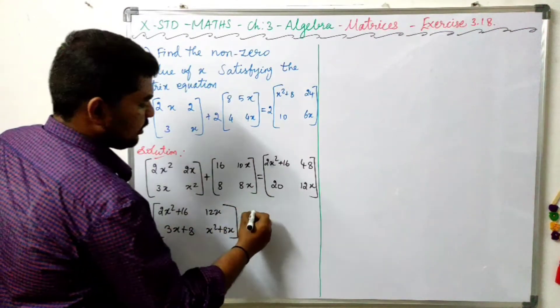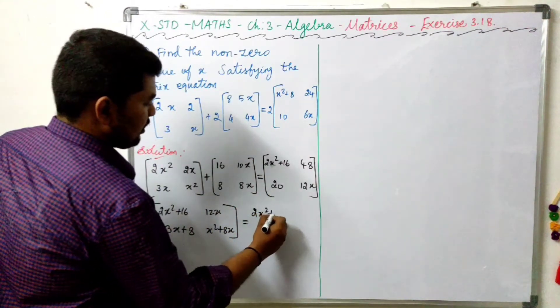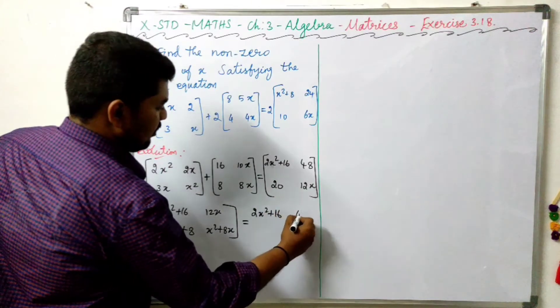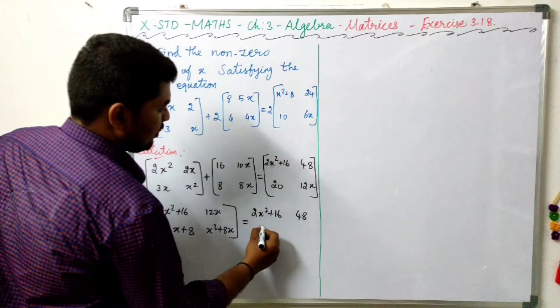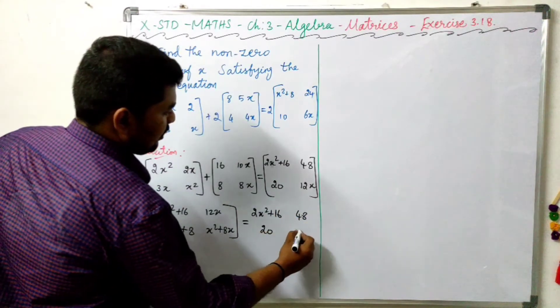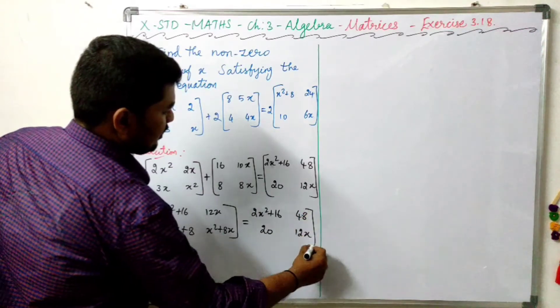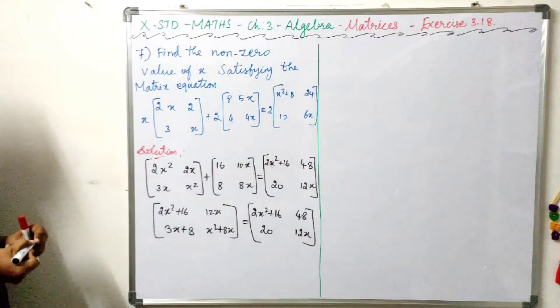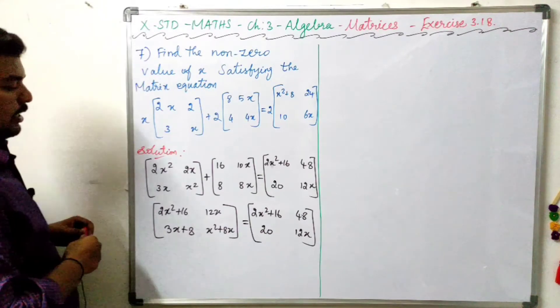Equal to 2x square plus 16, 48, 20, 12x. Okay. So corresponding elements are equal. We already said the matrix is the same.